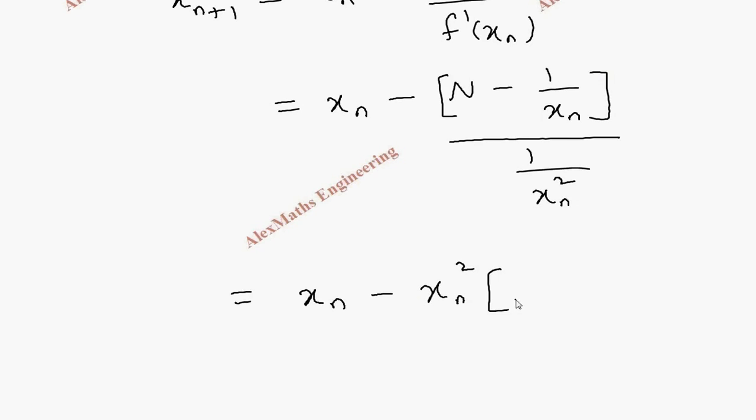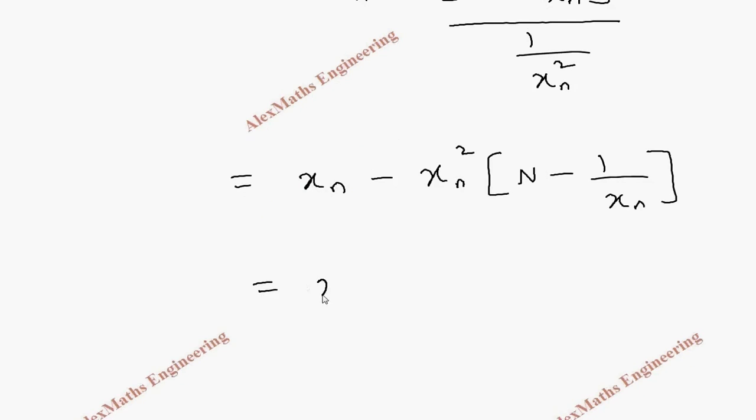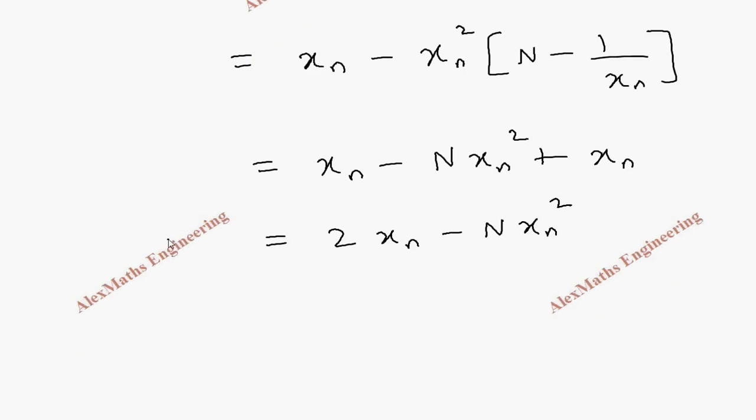Now multiplying this inside, we get x_n minus N times x_n square, plus after multiplying this we're left with only x_n. So totally it is 2x_n minus N times x_n square. So this is our x_n+1.